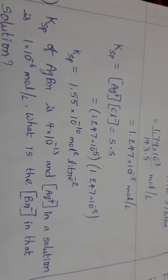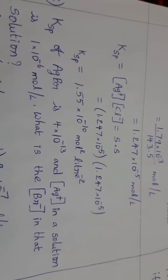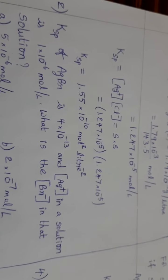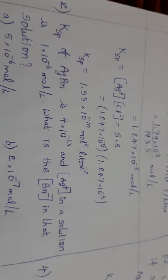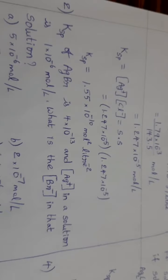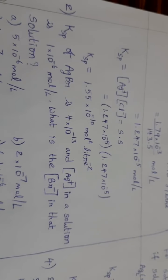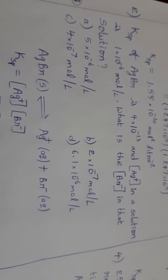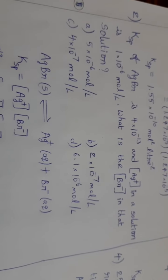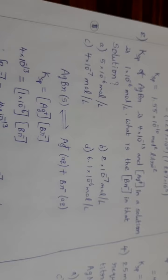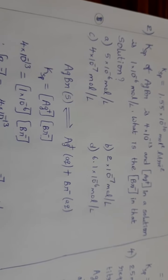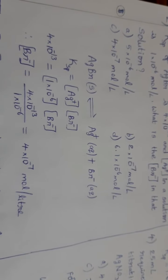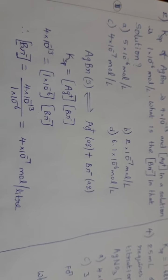Question 2: Ksp of AgBr is 4 × 10⁻¹³ and the Ag⁺ ion concentration in a solution is 1 × 10⁻⁶ mol/L. What is the concentration of Br⁻? Using Ksp = [Ag⁺][Br⁻], we substitute the known values to find [Br⁻] = 4 × 10⁻⁷ mol/L. Option C is the answer.